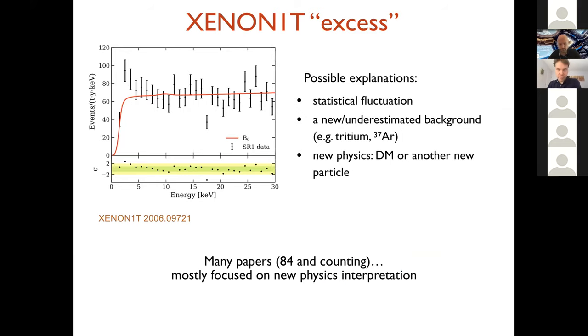Now there's various possible explanations. Maybe the first one is a statistical fluctuation. That's always possible. Weirder things have happened. Perhaps the most likely explanation from Occam's razor is that there's an underestimated background. The collaboration themselves have talked about tritium, and people have also raised the possibility of 37 Argon. But we're not in the business of just finding backgrounds. We want to explain new physics, find new physics.